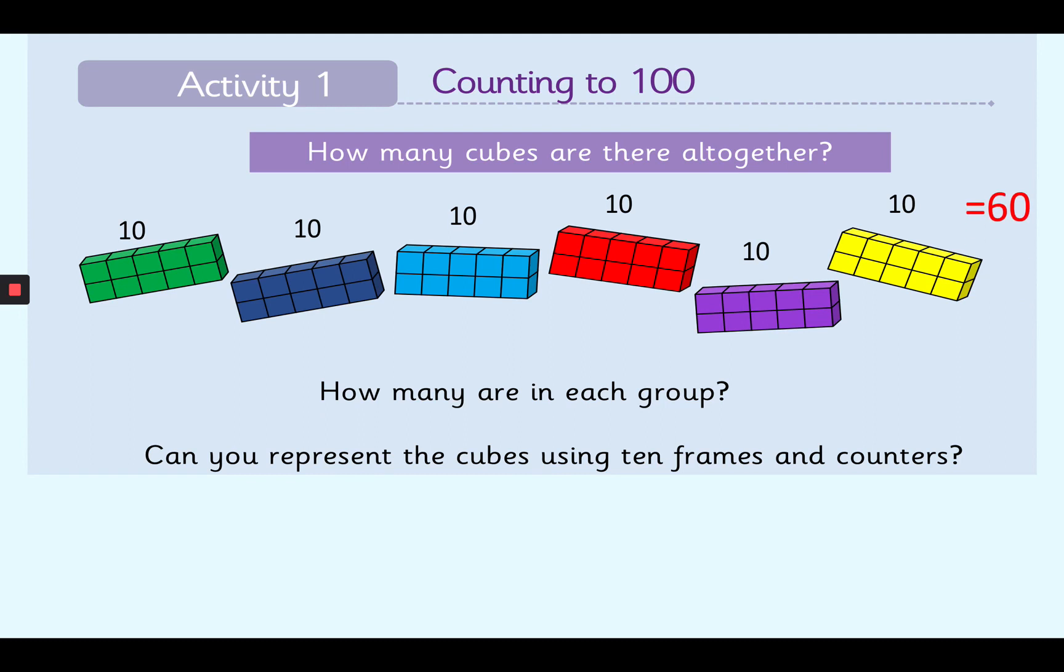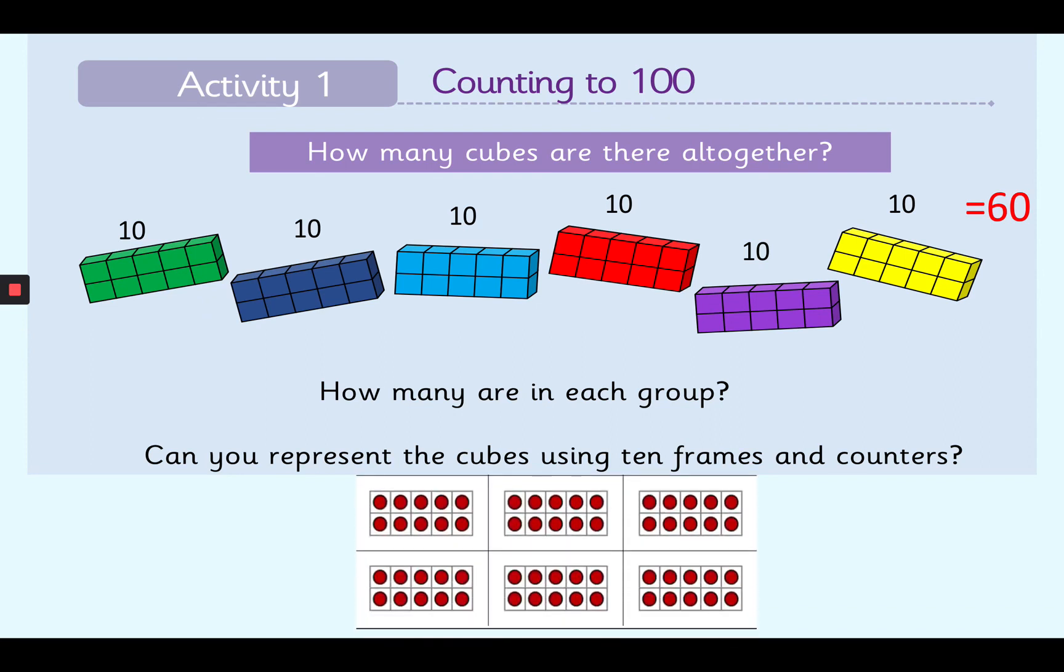Can you represent the cubes using 10 frames and counters? Okay, this is what it should look like. So we have 1 10 frame, 2, 3, 4, 5 and 6. And all of the squares are filled up with counters. So we have 60 all together.